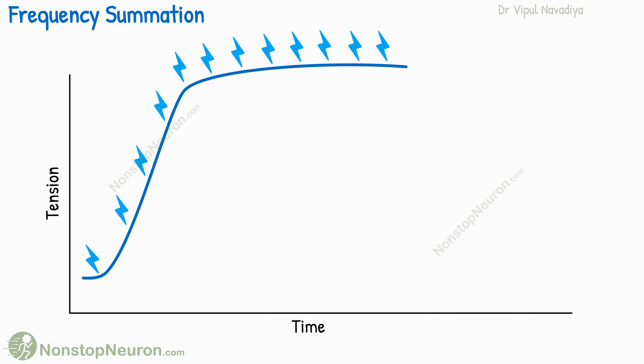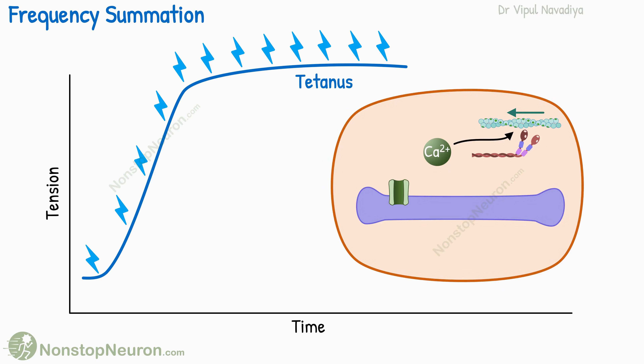Eventually a state is reached where individual twitches occur so close that they cannot be distinguished from each other. This state is called tetanus. In this state, the tension remains at a steady plateau. The reason behind tetanus is that at a high frequency of stimulation, there is not enough time to pump the calcium back into the sarcoplasmic reticulum, so the fiber cannot relax. Above this fusion frequency, very little increase in tension is seen. So this was frequency summation.